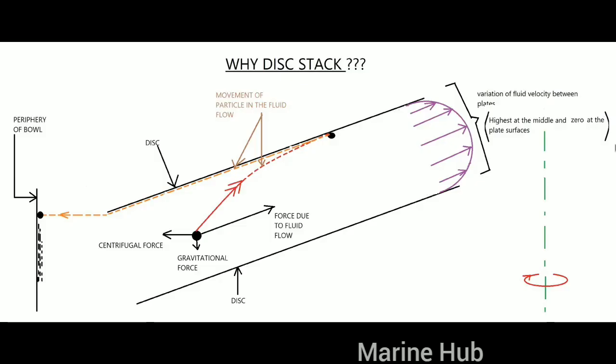There is a streamline flow in between the space of two discs. Maximum velocity is at the middle and zero velocity when approaching the plates. A particle entering between the disc space will tend to be pushed upwards by the fluid flow.